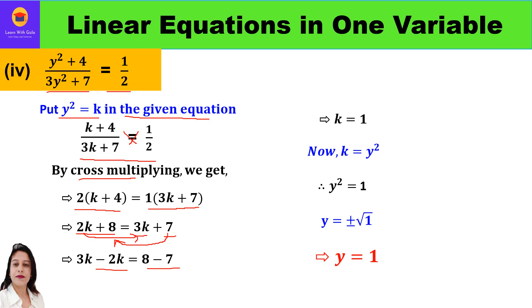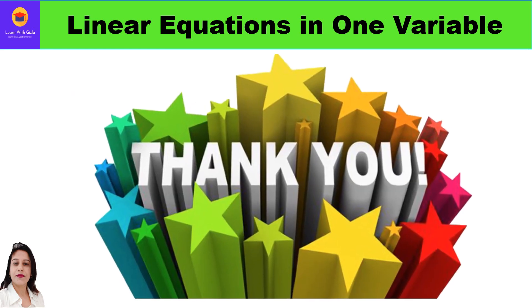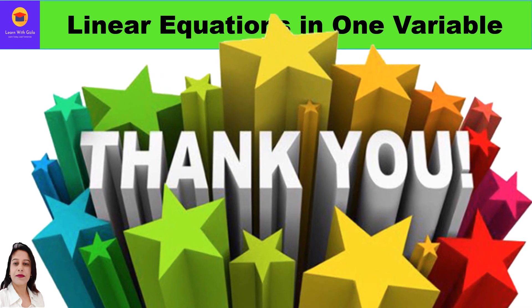This implies k = 1. Replacing k with y², we get y² = 1, so y = ±1. Since we need the positive value, y = 1. That's it — hope you have understood all these questions. Please do like and subscribe to my channel. Thank you everyone, have a great day ahead!